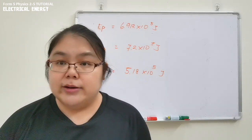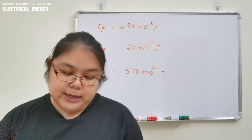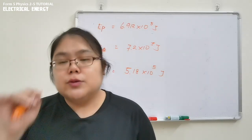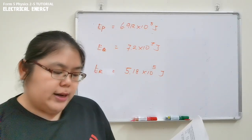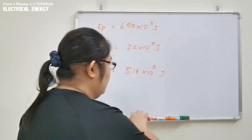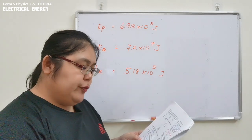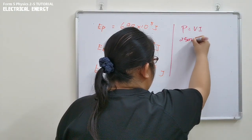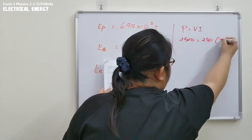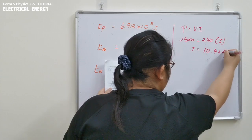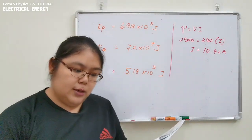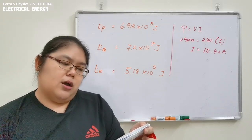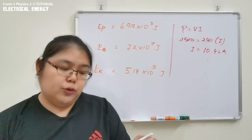For part (a), using P = VI with P = 2500 W and V = 240 V, the current is 10.42 amperes. This is the current flowing through the cable. For part (b), referring to the table, we need to choose the smallest wire diameter that can safely support more than 10.42 amperes.